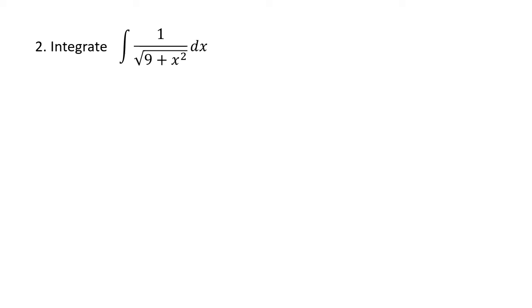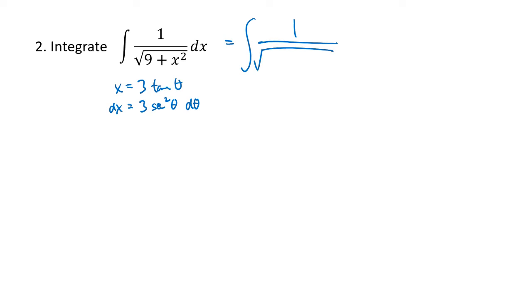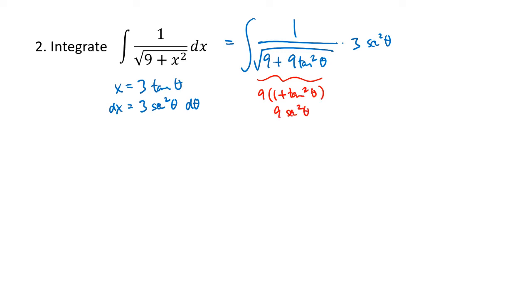In this problem, we see the a squared plus x squared pattern, which means since our a is 3, we're going to substitute x equals 3 times the tangent of theta. dx is the derivative of 3 tan theta, which is 3 secant squared theta d theta. Plugging in, we get 1 divided by the square root of 9 plus 9 tan squared theta, times 3 secant squared theta. Factoring out the 9 inside the square root gives 9 secant squared theta, and taking the square root gives 3 secant theta. So we have the integral of 1 over 3 secant theta multiplied by 3 secant squared theta d theta.